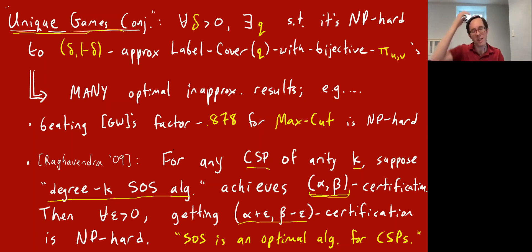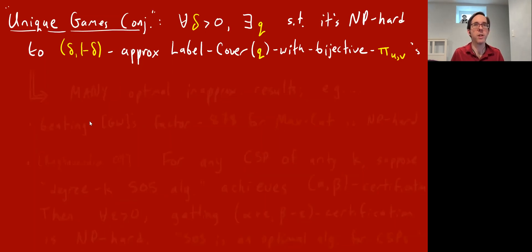He showed: take any CSP of arity k and consider this degree k SOS semi-definite programming-based algorithm. And basically whatever approximation or certification it achieves, it's NP-hard to do better than that by ε. So sort of saying that this is the best polynomial time algorithm, this SOS algorithm for approximating CSPs, but only assuming this unique games conjecture do we know that. So that's a super amazing result. If unique games conjecture was true, it would really close the book on the theory of approximately solving CSPs in polynomial time.